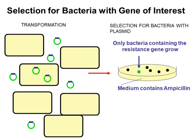بعد الـ transformation، تُزرع البكتيريا على وسط يحتوي على الـ ampicillin. البكتيريا التي لم تأخذ الـ plasmid لن تنمو لأنها لا تملك الـ ampicillin resistance. البكتيريا التي أخذت الـ plasmid لكن لم يُدمج فيها الجين المطلوب بشكل صحيح لن تُعطي الضوء الأخضر. فأنتخب البكتيريا التي تنمو على الـ ampicillin وتُعطي الضوء الأخضر تحت الـ fluorescence microscope — وبهذا أكون حصلت على الـ recombinant DNA.